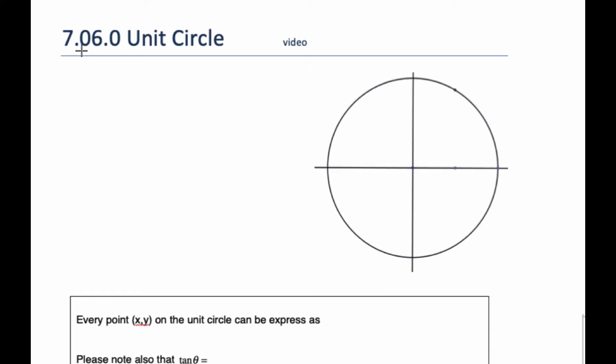Alright, so today we're going to talk about the unit circle. Being a unit circle, we know that the radius of this scenario is 1, so every point on the circle has a radius of 1.